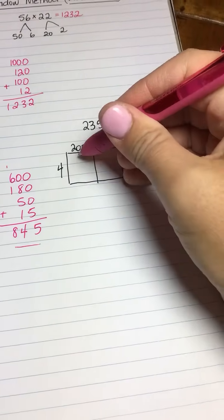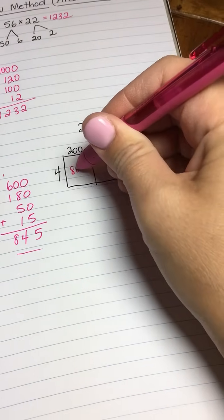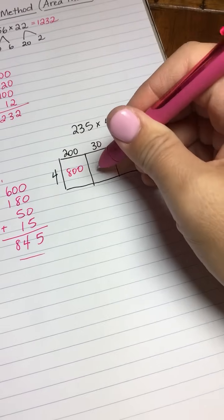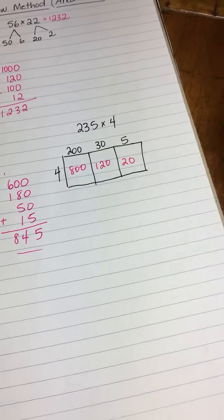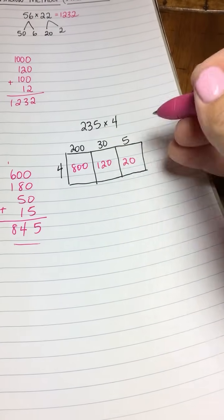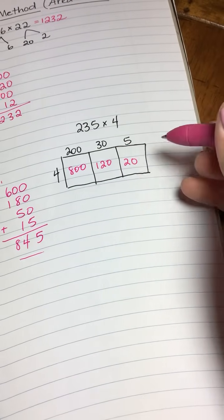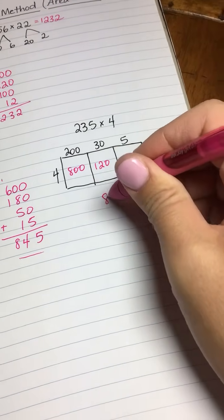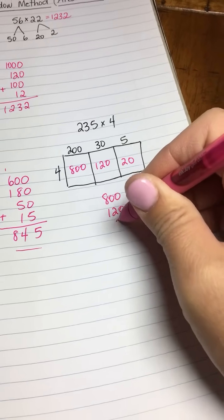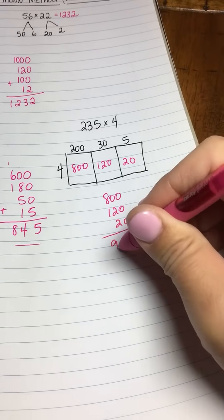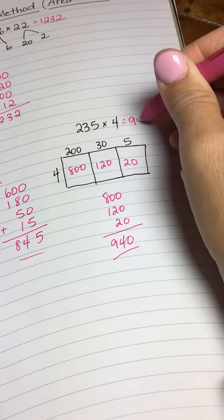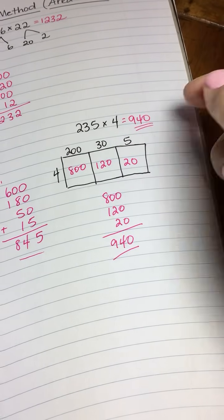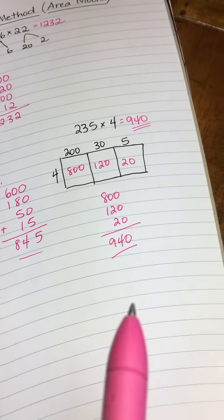Now we multiply. Here we're going to do 4 times 200, which makes 800, 4 times 30, which makes 120, and 4 times 5, which makes 20. Now we'll add up 800 plus 120 plus 20, which gives us 940. So the product of 235 and 4 is 940.